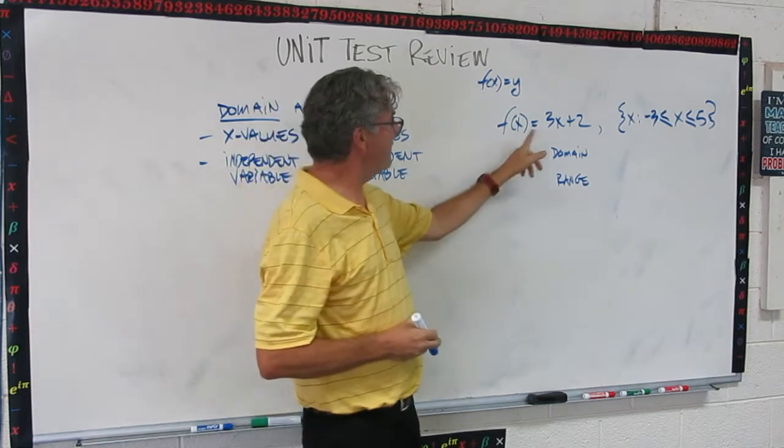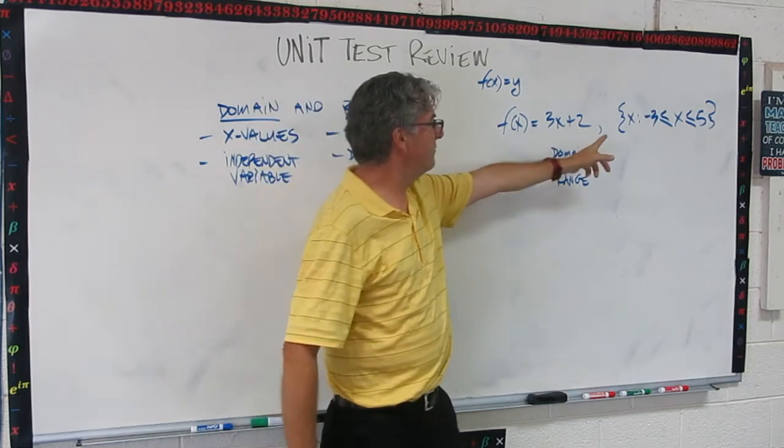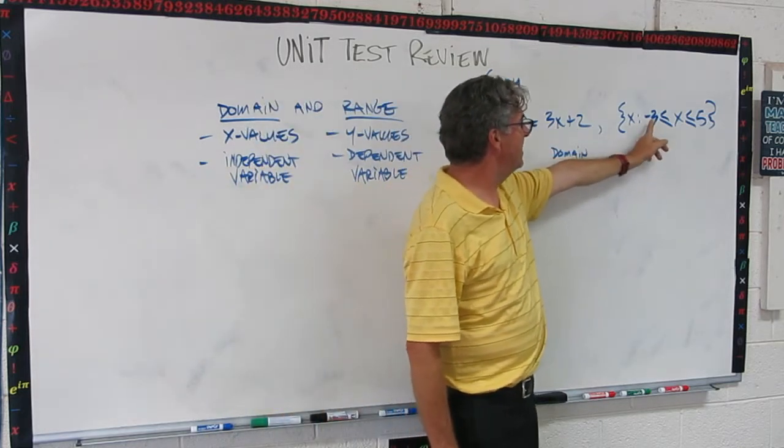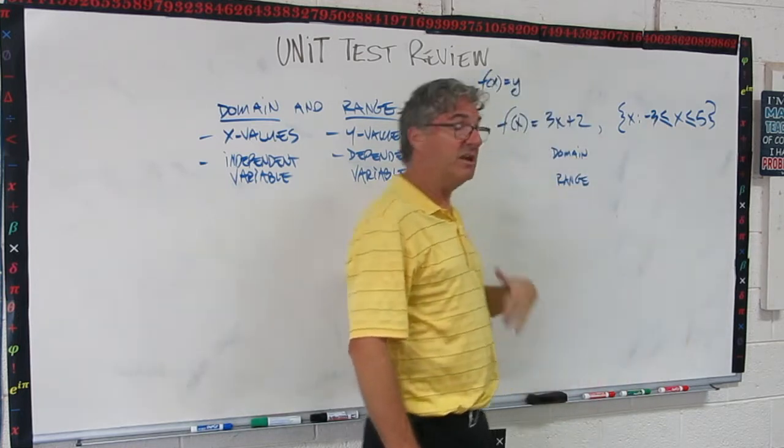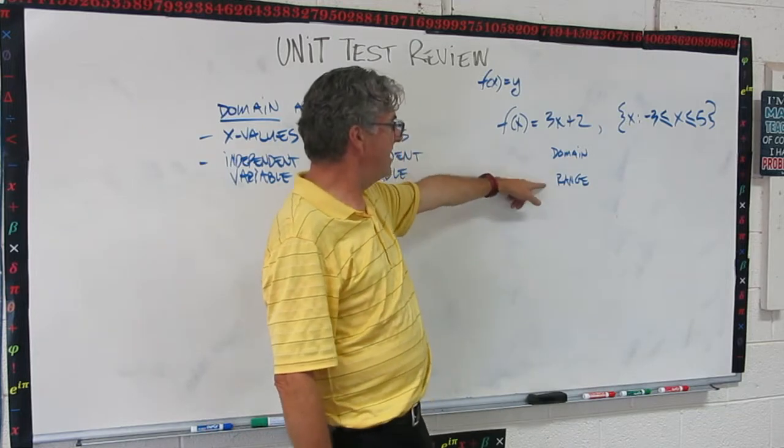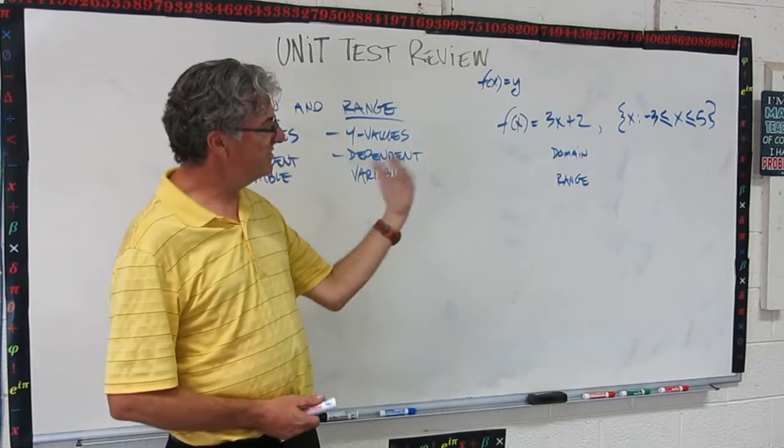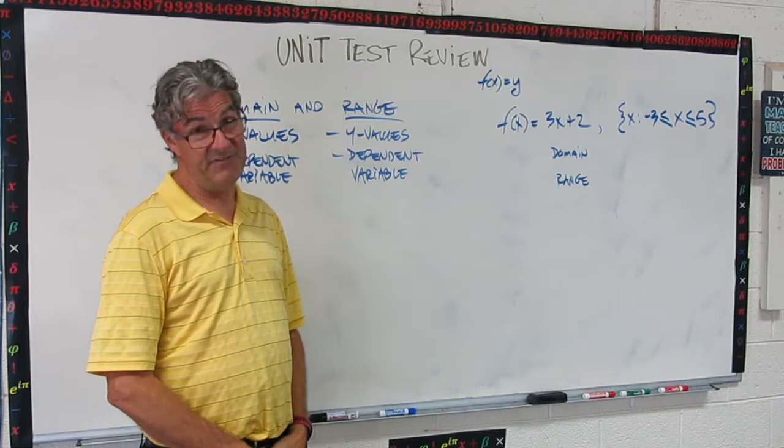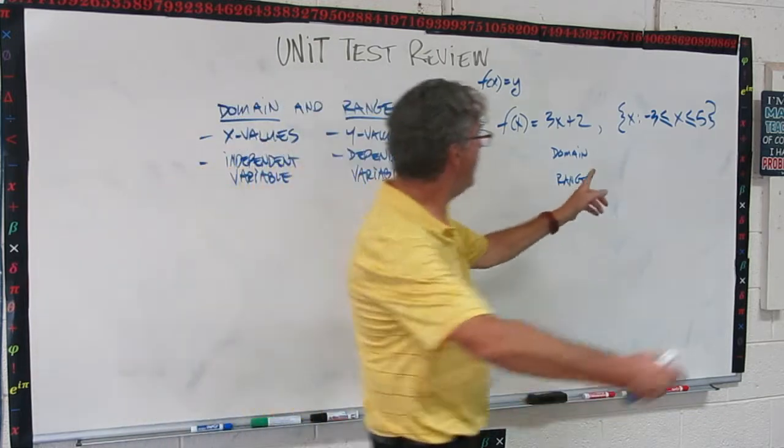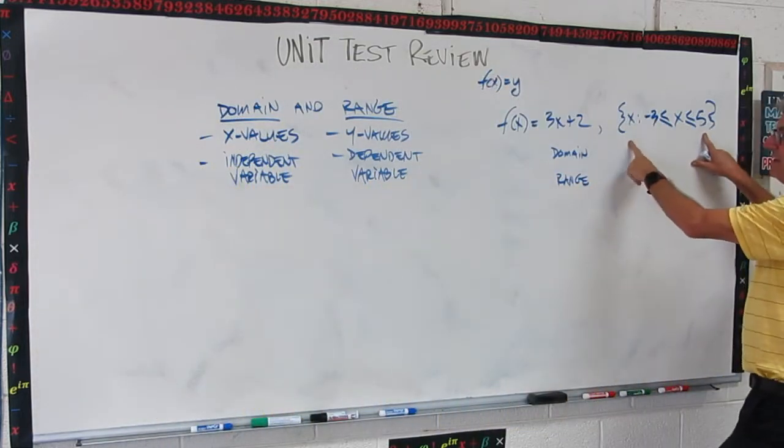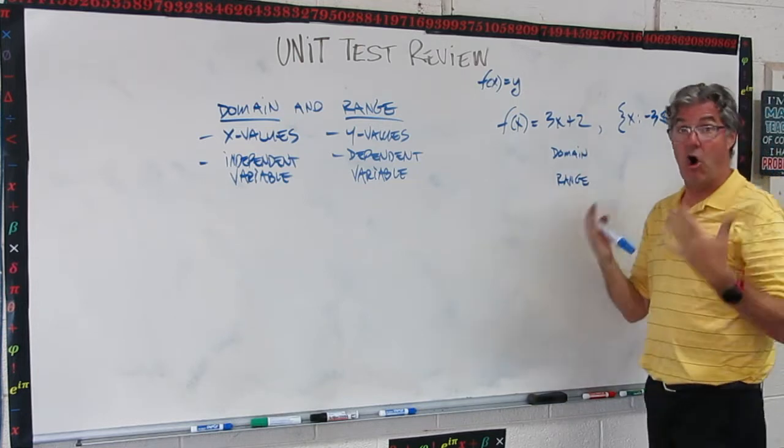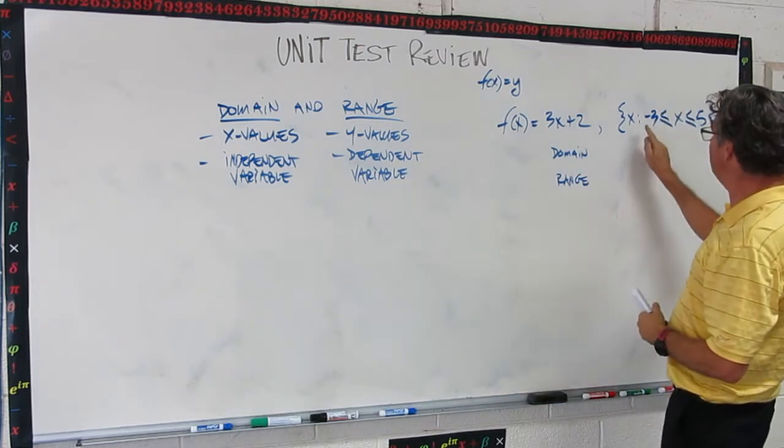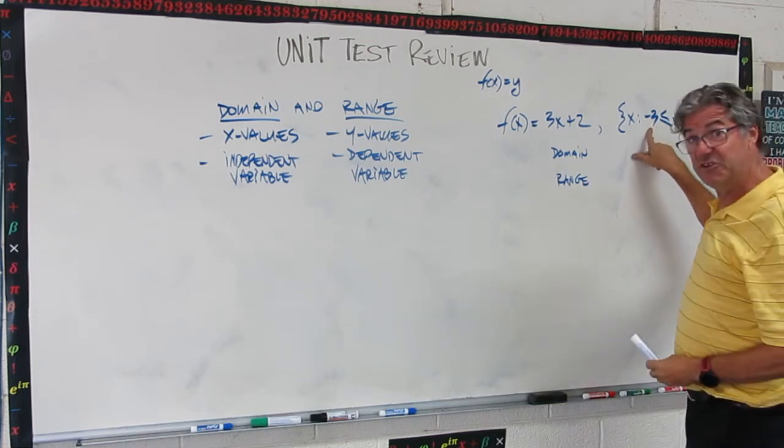So if f of x is 3x plus 2, and we're using all x such that negative 3 is less than or equal to x, which itself is less than or equal to 5, now we're going to be asked the question, what's the domain and what's the range? Now with this kind of function, the domain is given to you. If you don't have this statement, then the domain is any number you can put in for x, and that would be all real numbers. But since they've limited it, they've actually given you the domain.